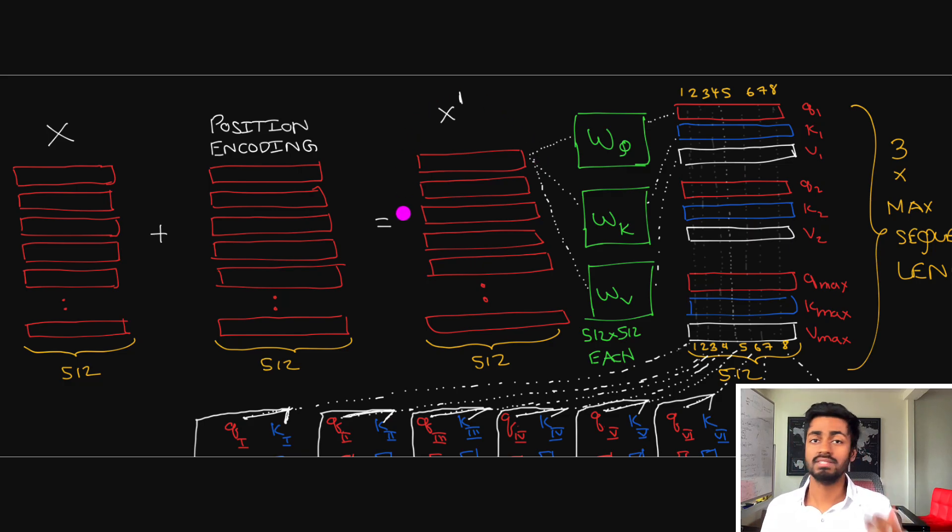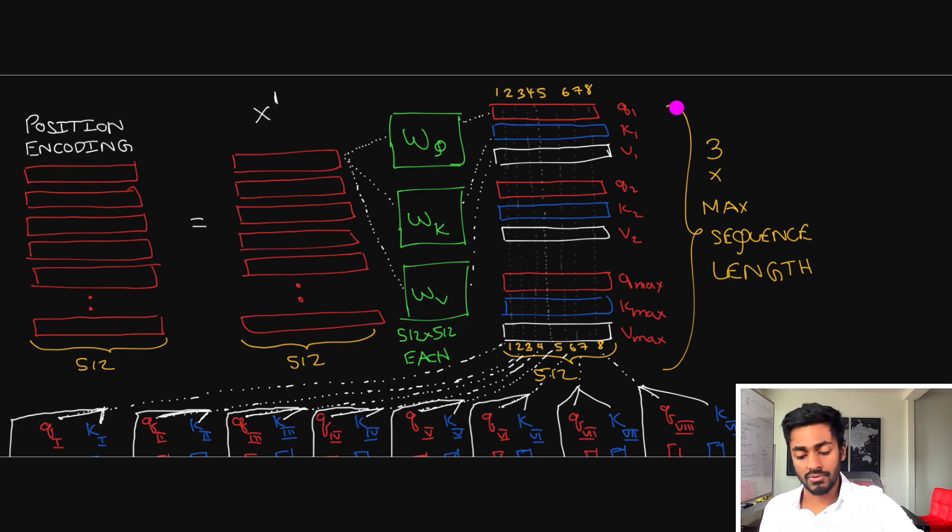Now it's from here that the multi-head attention unit is kicked off where each vector is now split up into three vectors of query, key, and value. Each of these are 512 dimensional vectors and so we're going to end up with three times the maximum sequence length because it's basically three times the number of words that we saw here.